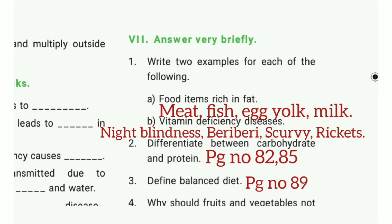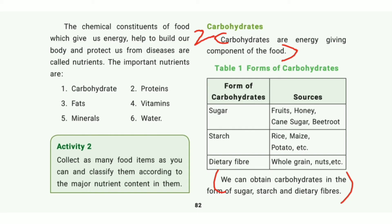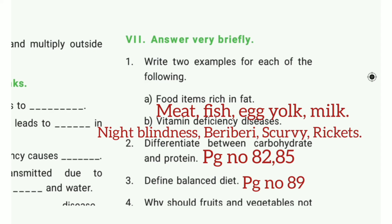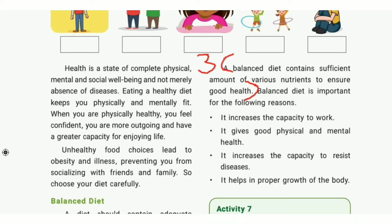For this, take page number 82. Under the carbohydrate heading, mark the first point: carbohydrates are energy-giving components of food. Then on the diagram below, mark the end line. Then take page number 85. Under the proteins heading, mark the first five lines — proteins are necessary. Then third question: define balanced diet. Take page number 89 — a balanced diet contains sufficient amount of various nutrients to ensure good health.